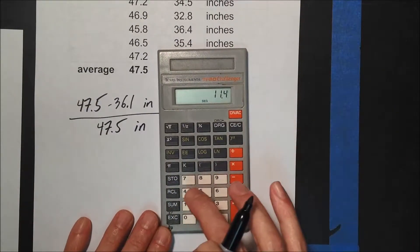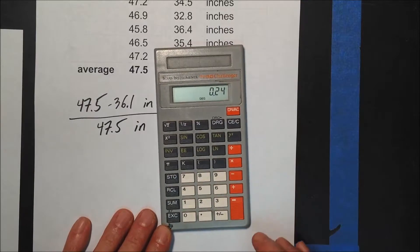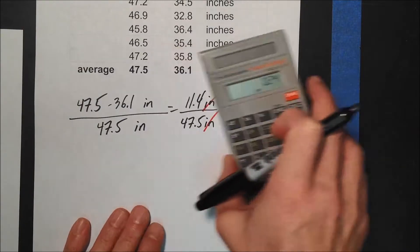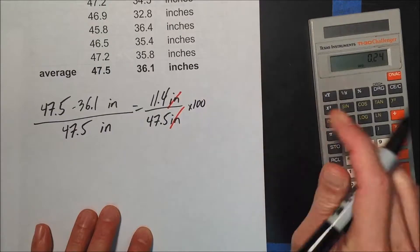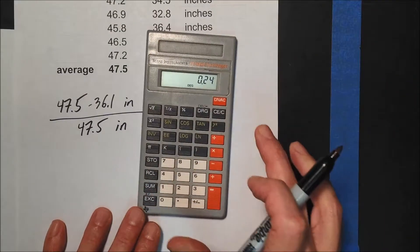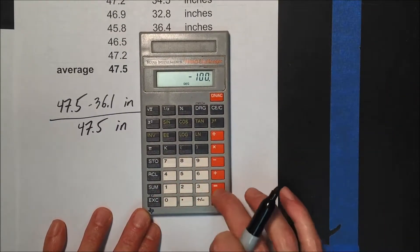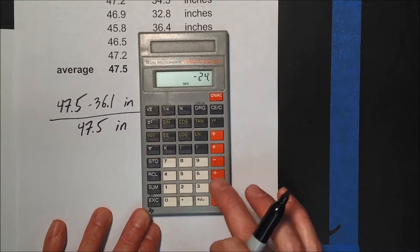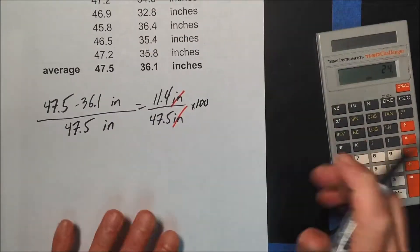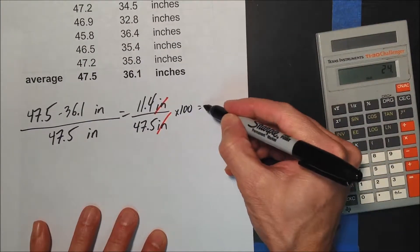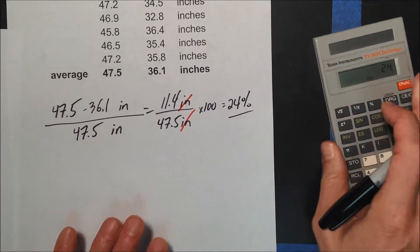So 47.5 minus 36.1 equals 11.4. Now I have 11.4 inches divided by 47.5 inches. Let's do 11.4 divided by 47.5 equals 0.24. Then you multiply that by 100, and that gives you a percent. So I get the answer: 24%.